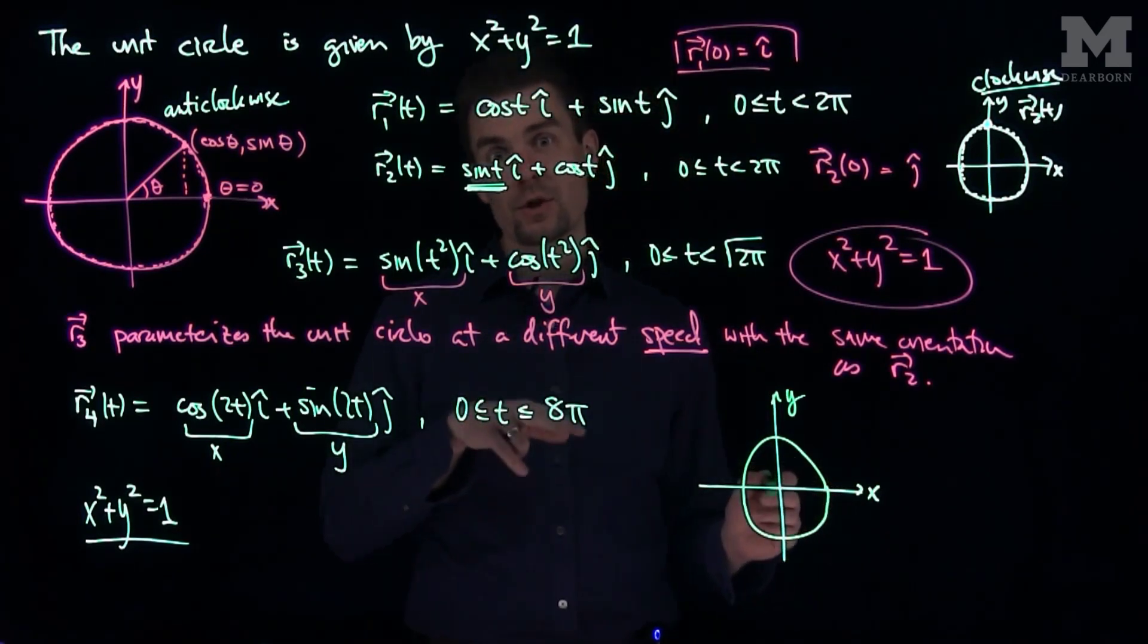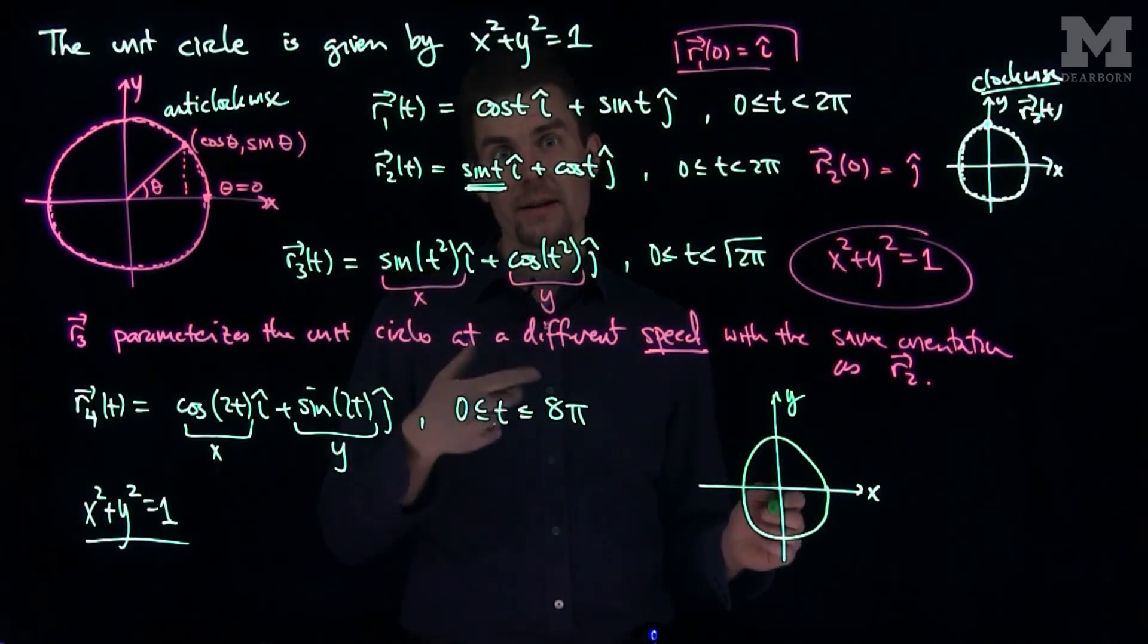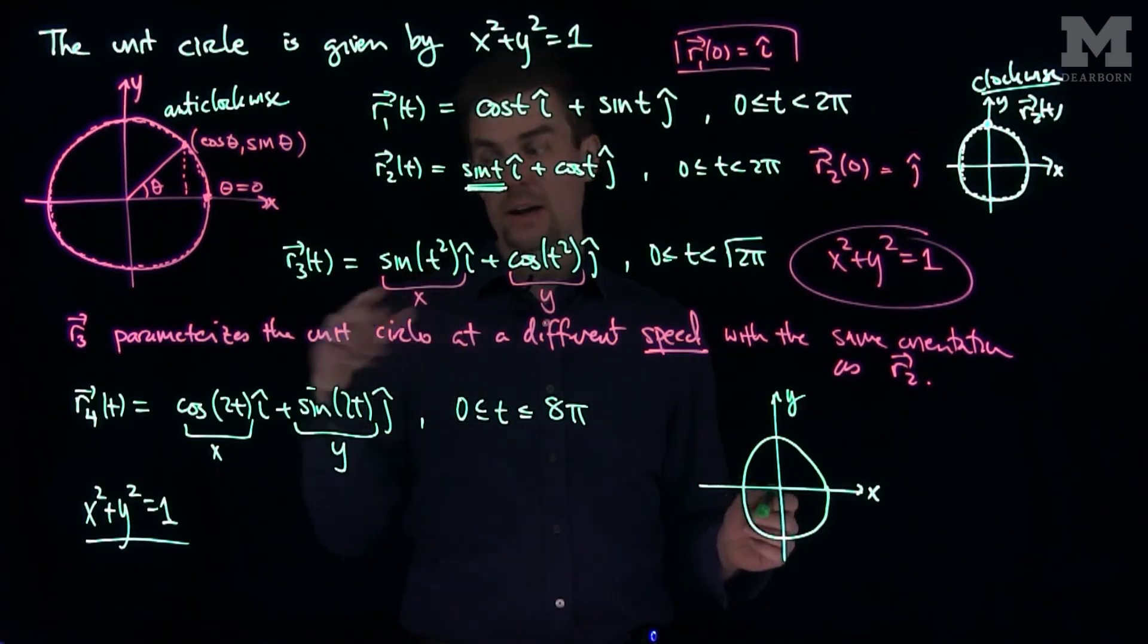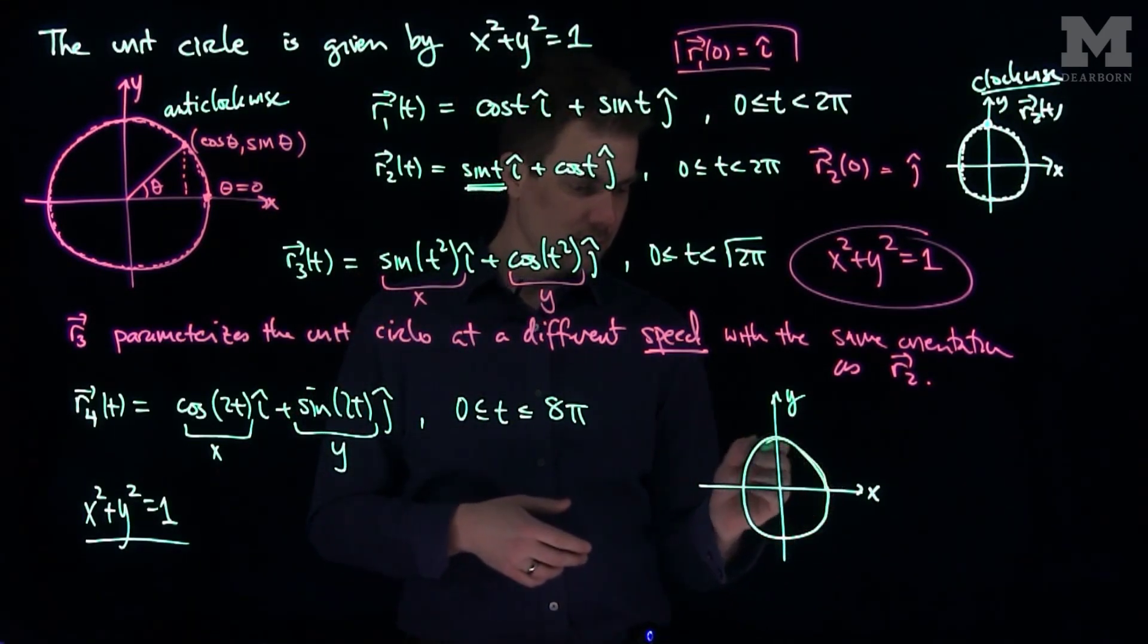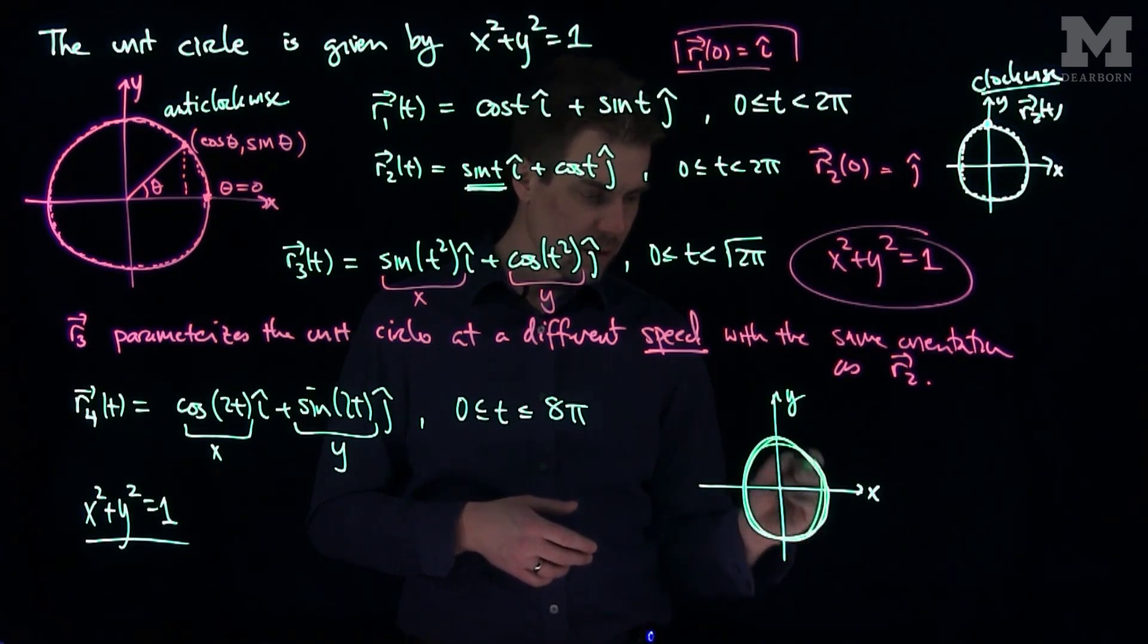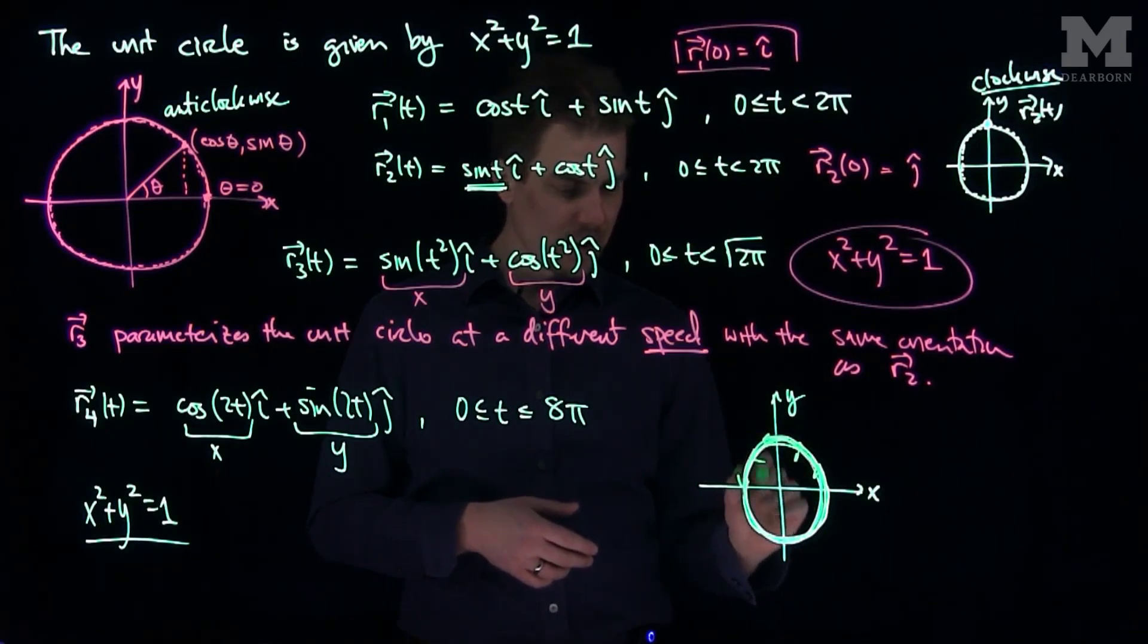Since I go from zero to not 2π but to 8π, I'll go around again, I'll go around again, I'll go around again, I'll go around a total of eight times. So we'll trace out the circle eight times in the anticlockwise direction.